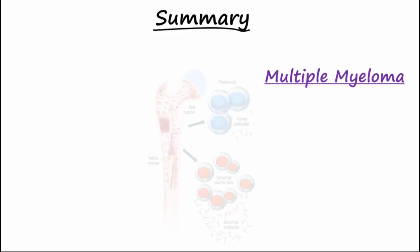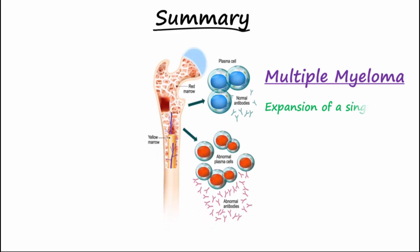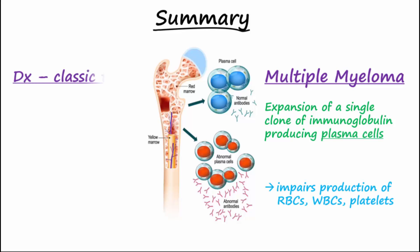In summary, multiple myeloma is an expansion of a single clone of immunoglobulin-producing plasma cells that leads to impaired production of red blood cells, white blood cells, and platelets. The classic triad is important for diagnosis.